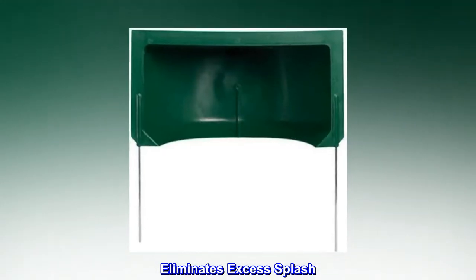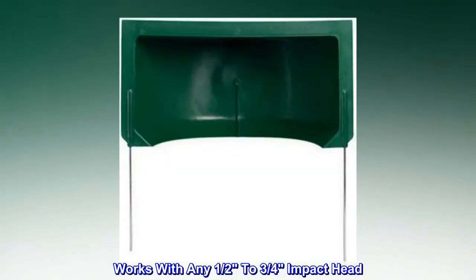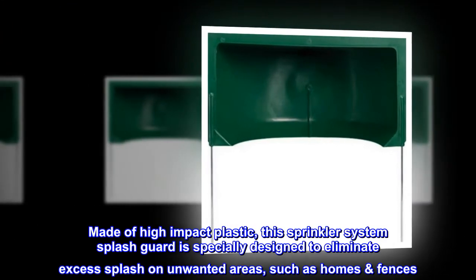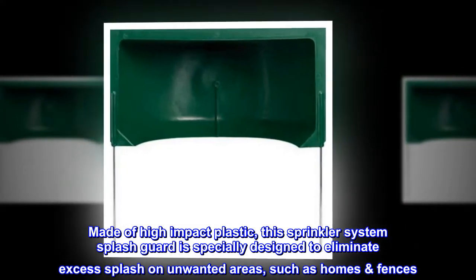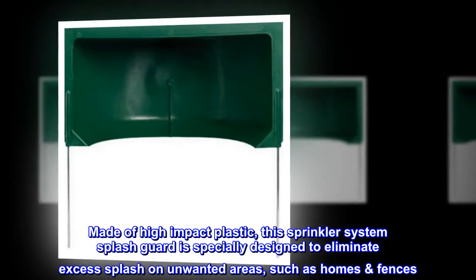Eliminates excess splash. Works with any half to three-quarters inch impact head. Made of high-impact plastic, this sprinkler system splash guard is specially designed to eliminate excess splash on unwanted areas, such as homes and fences. For outdoor use only.